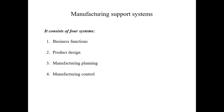The second category of the production systems includes the manufacturing support systems. The manufacturing support systems have four parts: business functions, product design, manufacturing planning, and manufacturing control.